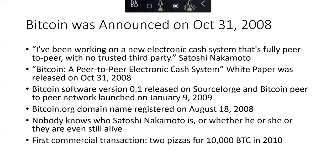He or they had probably been working on Bitcoin for quite a while. The Bitcoin.org domain name was registered in August of 2008, and in some internet comments he claimed he'd been working on it for a couple of years. Nobody really knows who Satoshi Nakamoto is, or whether he, she, or they are even still alive.